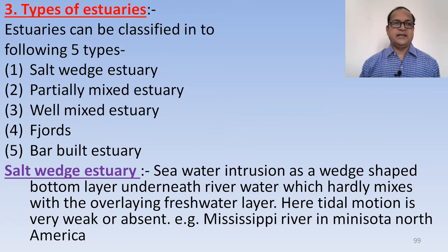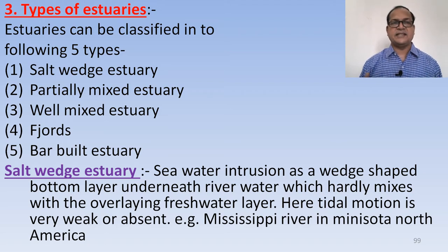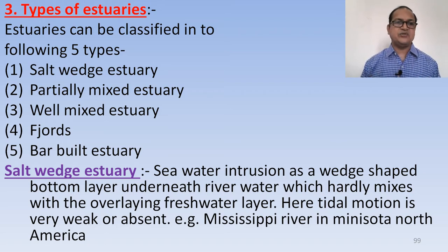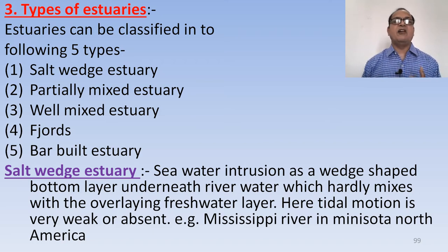Types of estuary: Estuaries can be classified into the following five types — salt-wedge estuary, partially mixed estuary, well-mixed estuary, fjord, and bar-built estuary.